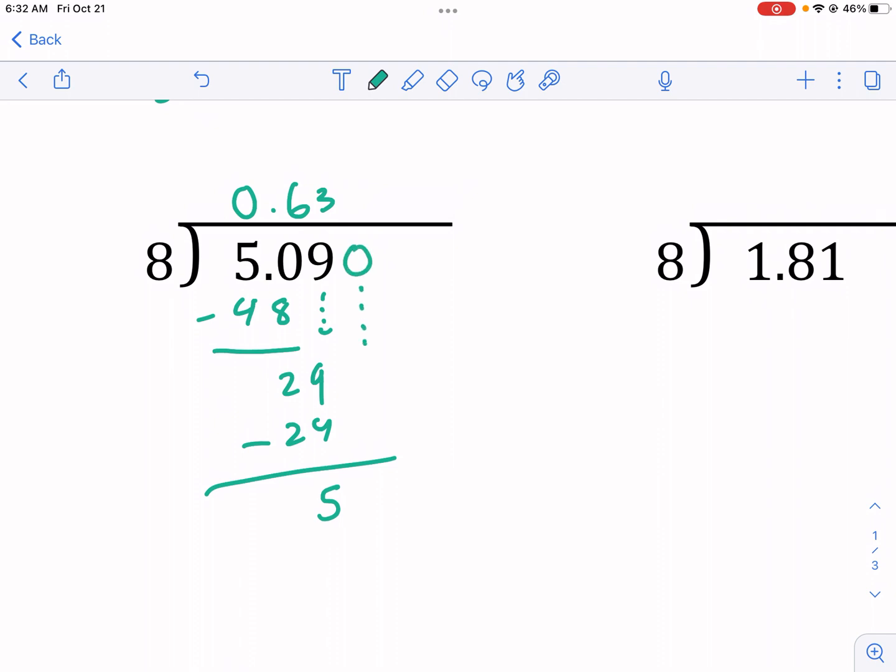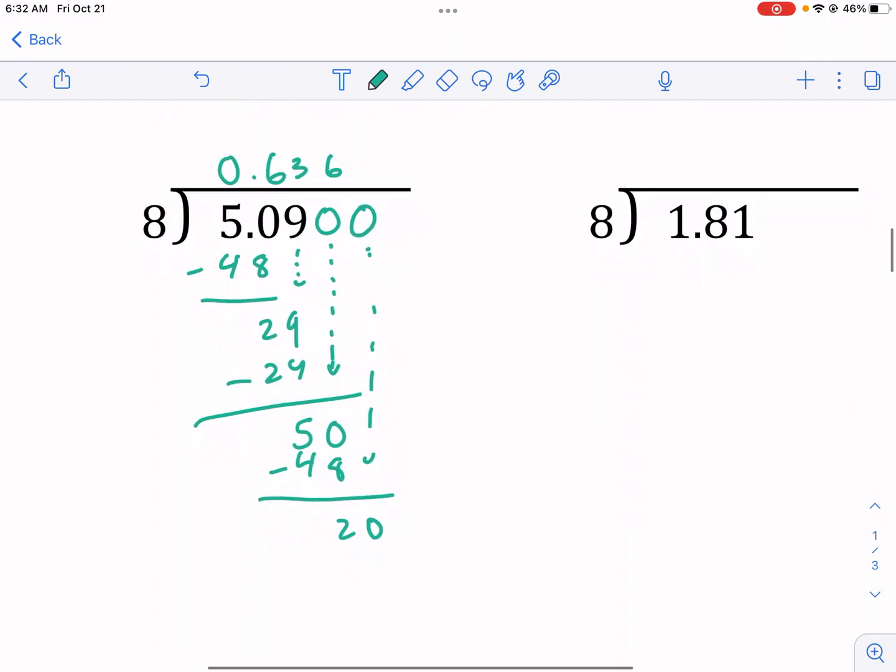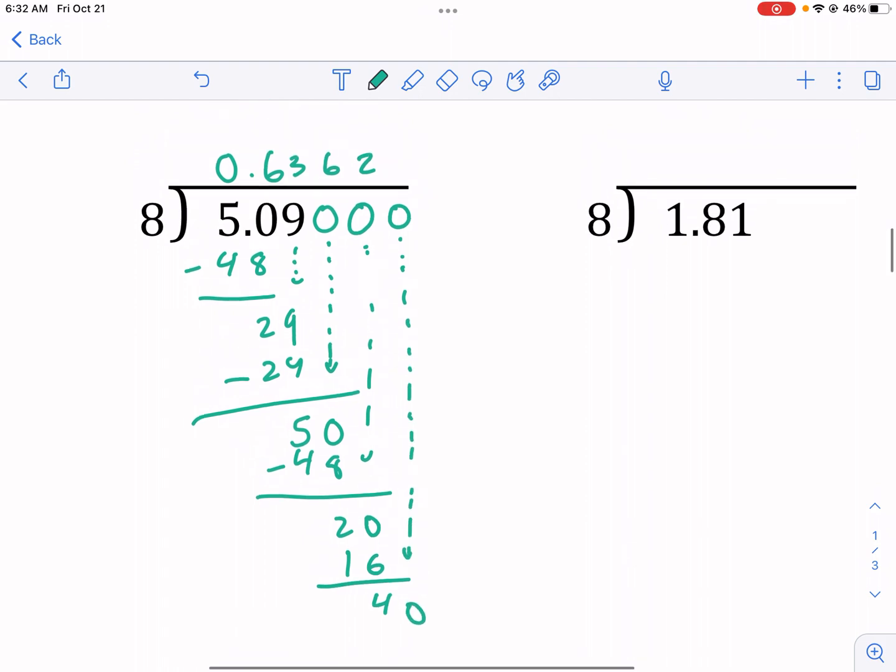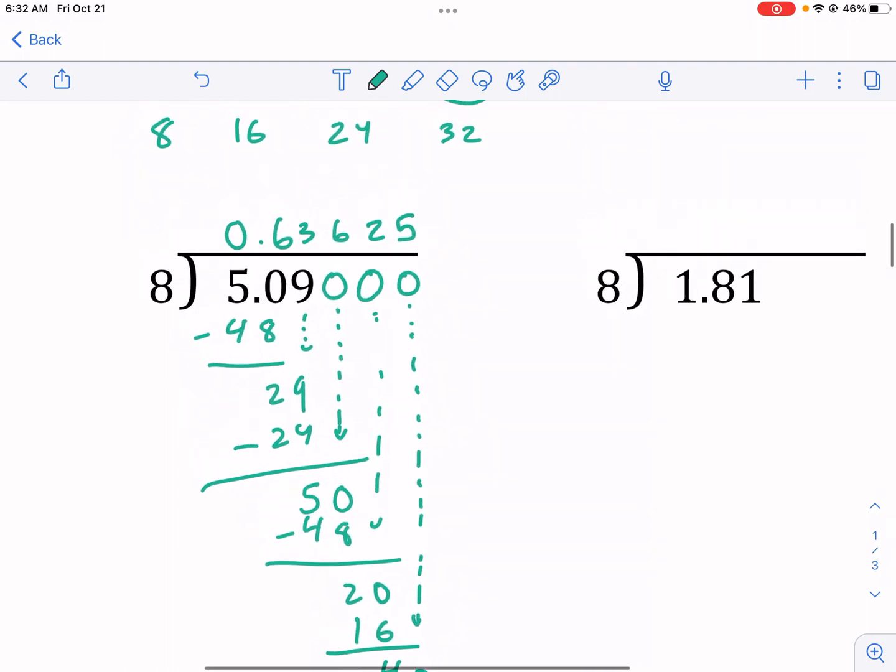I'm going to put a 0 here, and I'm going to drop this 0 down. Okay? So, now I have 8 into 50. Well, guess what? That's the same thing. It's 6, and that is going to be 48. Okay? And then I get 2. So, now I have 2, and I have to add another 0. So, I'm going to drop this 0 down. You can keep repeating this process with the 0s until you get even no remainder. So, I have 20. 8 goes into 20 2 times, and that's 16. Well, then I get 4, and then I'm going to drop down another 0. Okay? I'm actually glad I did this problem. So, now I have 8 goes into 40 5 times, and that is finally no remainder. Okay? So, I get no remainder, and my answer is going to be 0.63625.